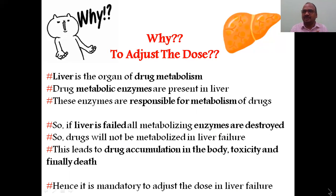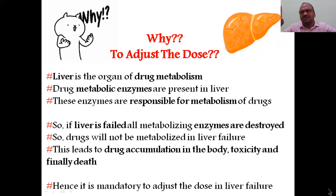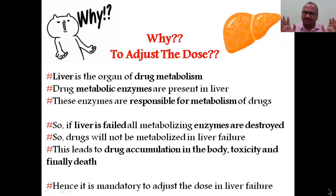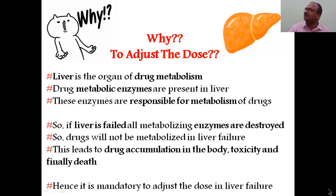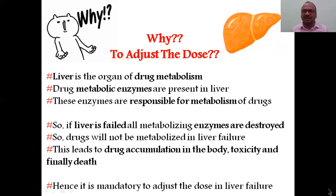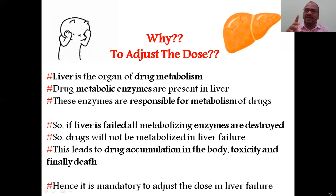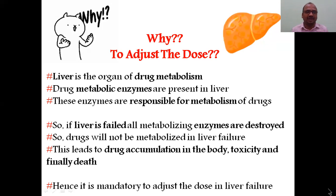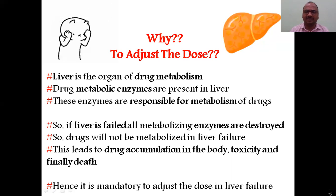If the liver has failed, all these metabolic enzymes are destroyed, and the drug will not be metabolized at all. It will go on accumulating in the body. As the patient keeps taking the second, third, fourth dose, the drug keeps accumulating and increasing in toxicity, which can lead to death. That is why it is mandatory to adjust the dose in the liver failure patient.